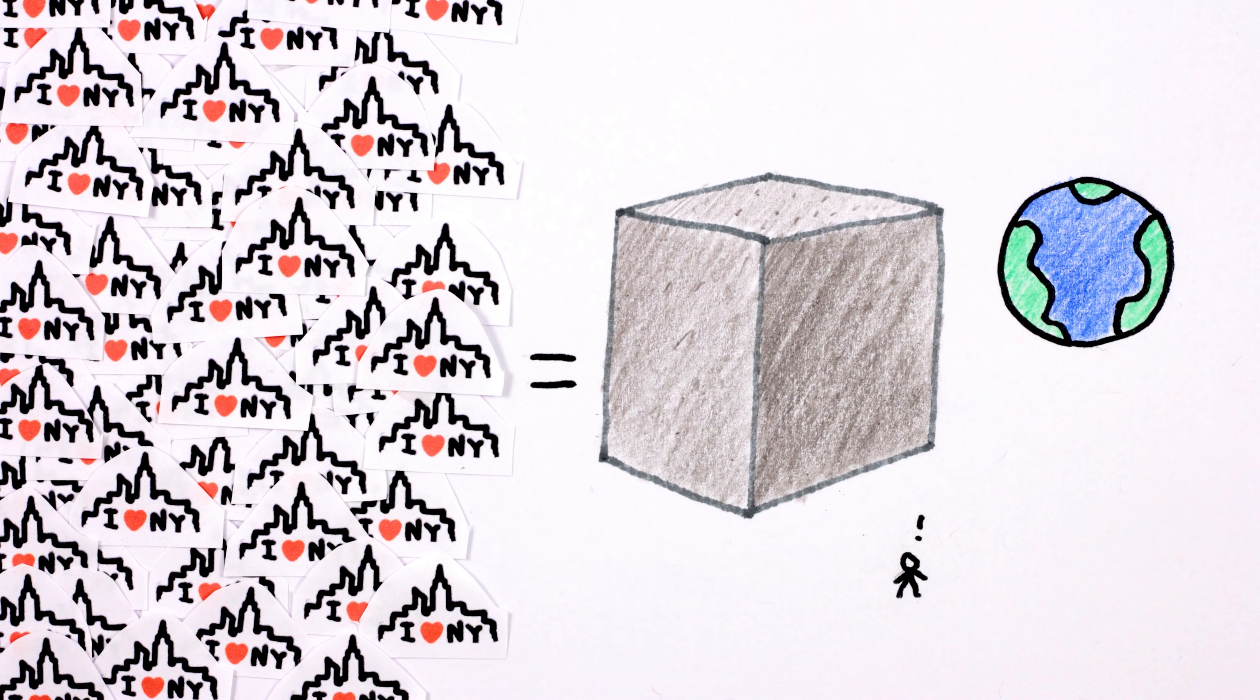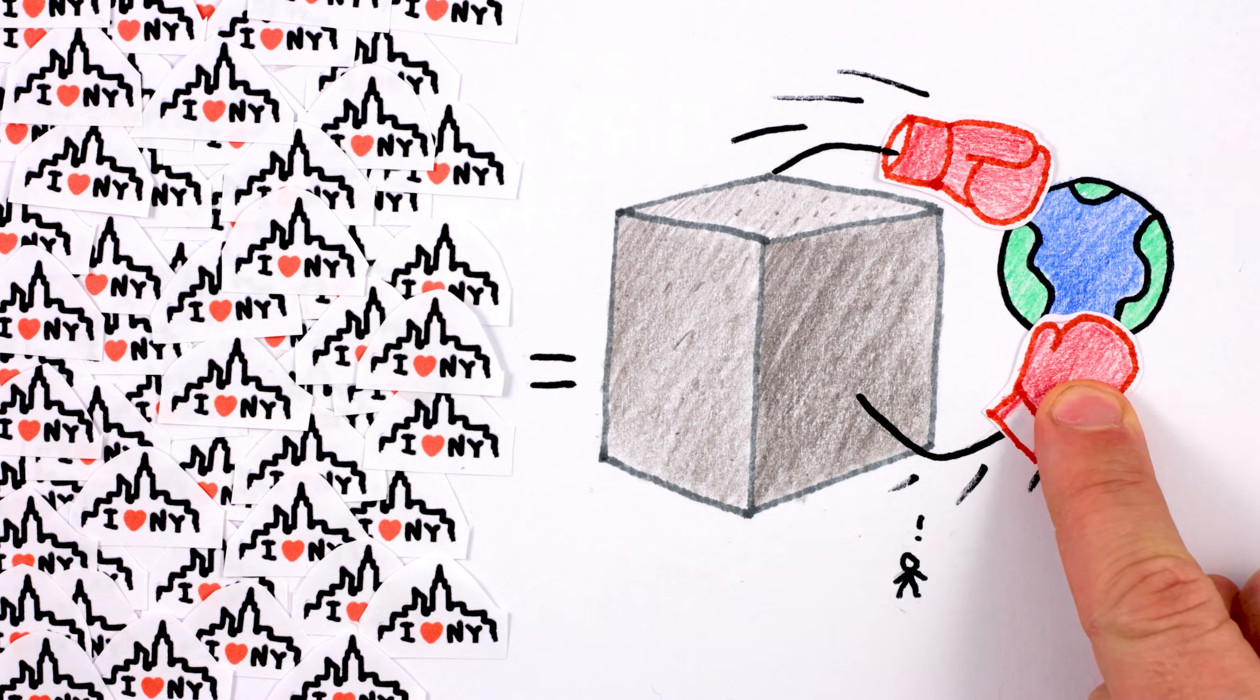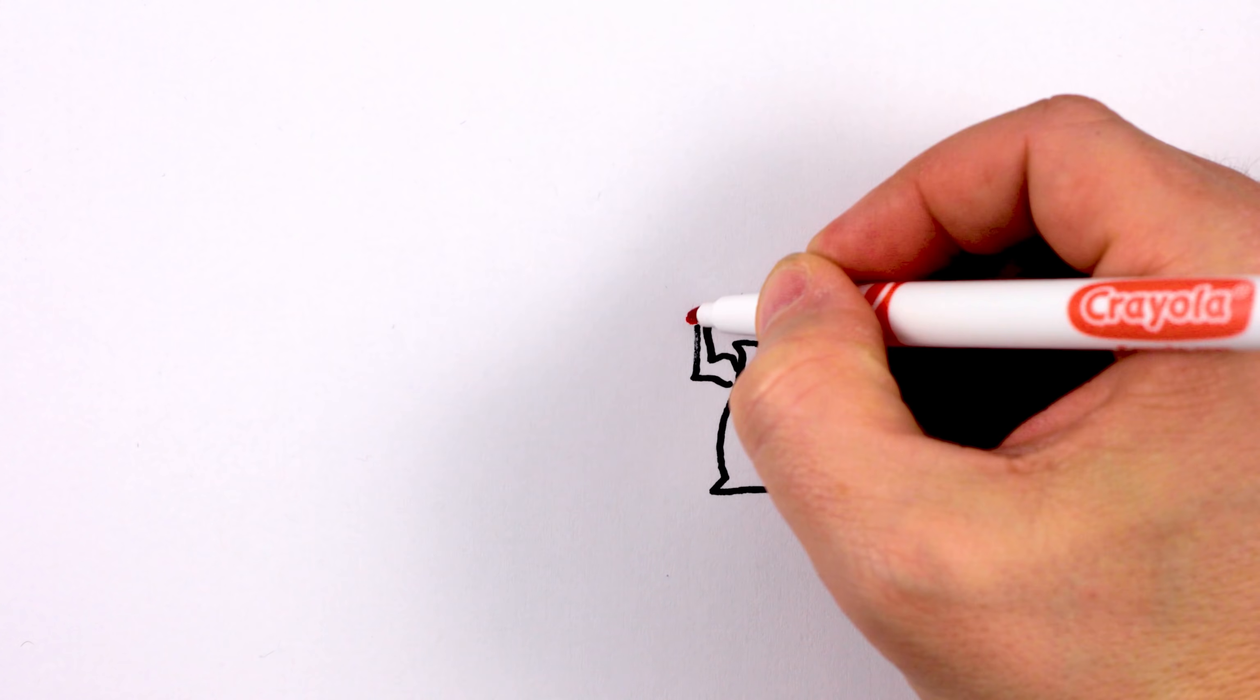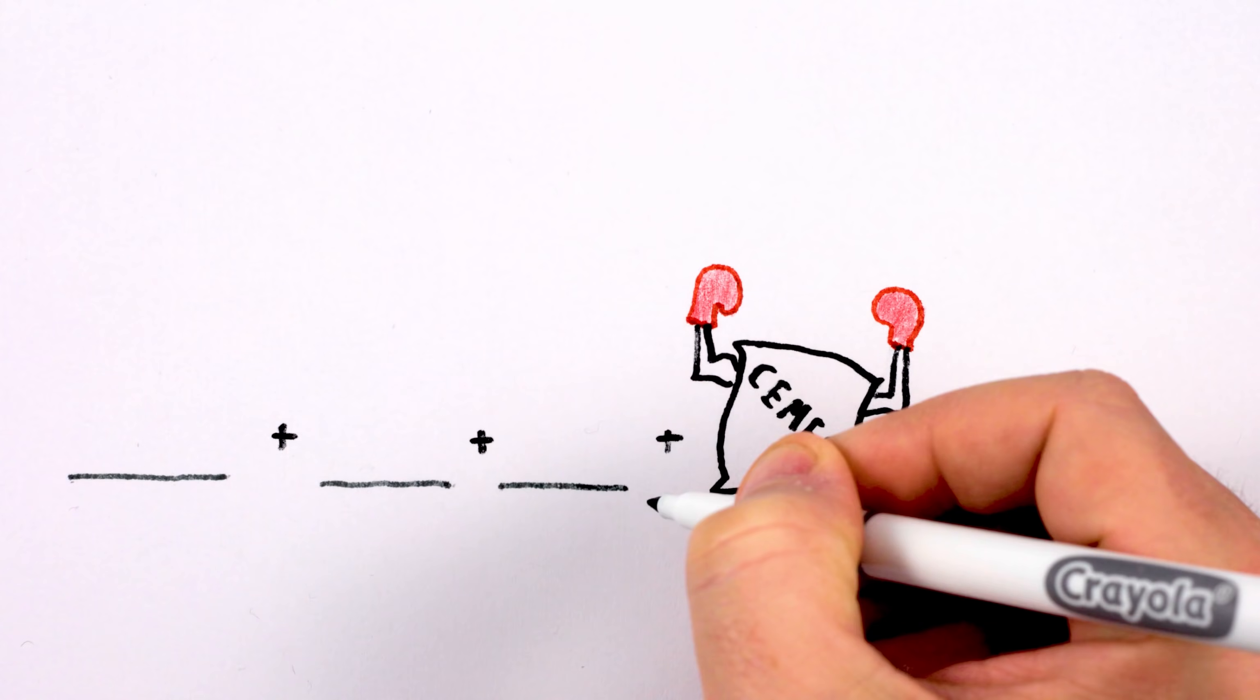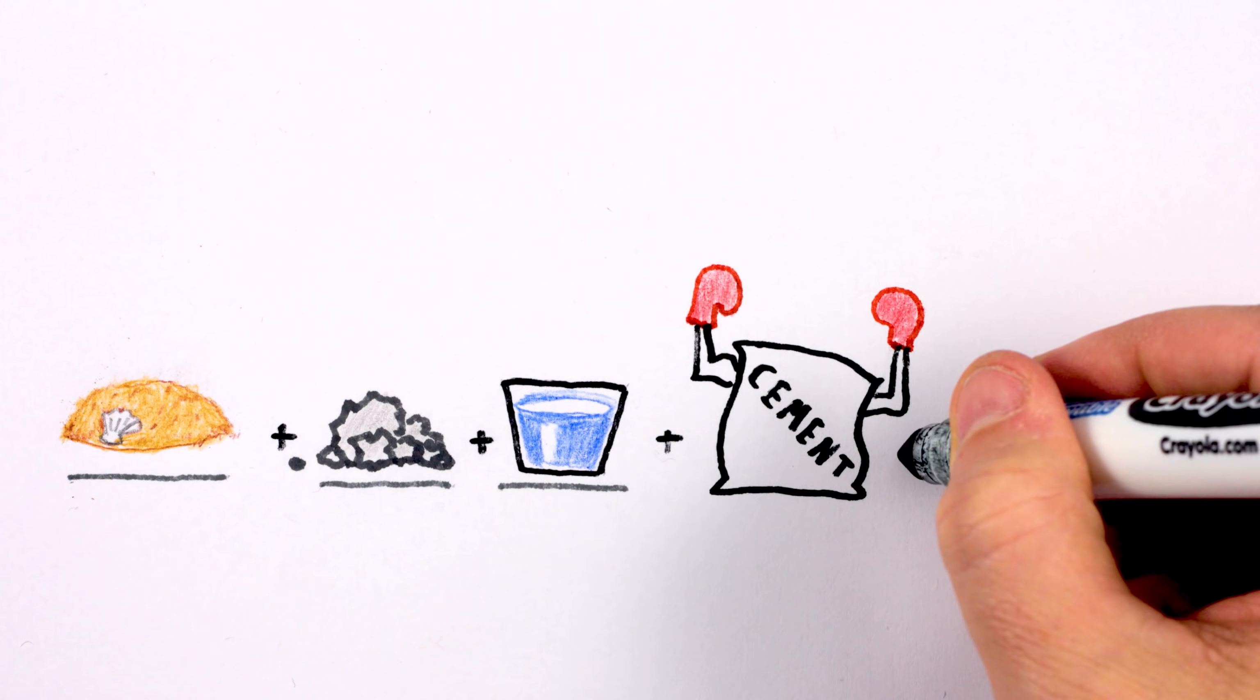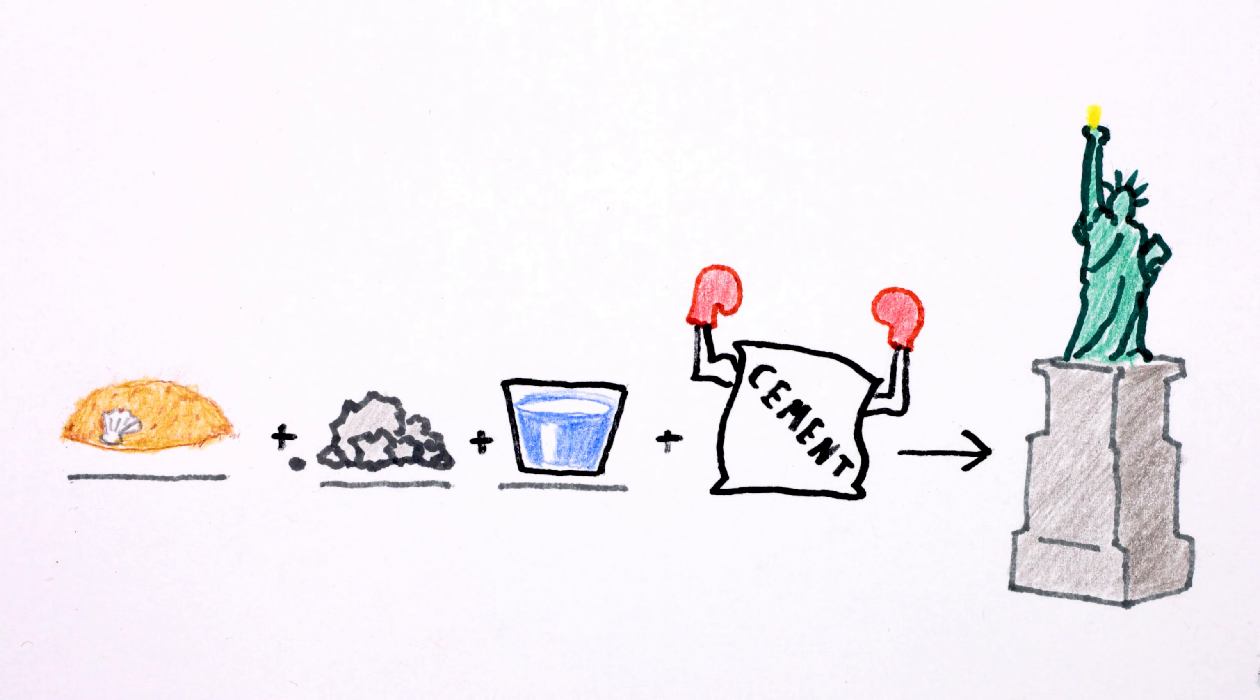And for the health of the planet, concrete is a one-two punch. Well, technically, cement is the heavy hitter. It's the thing that cements the basic ingredients of concrete - sand, rocks, and water - together into a single useful material.